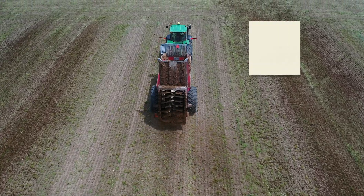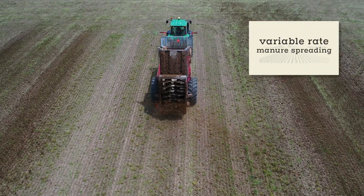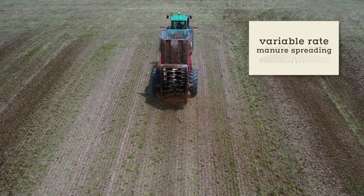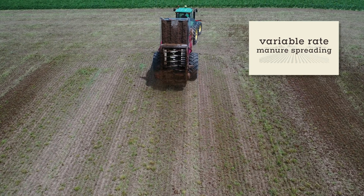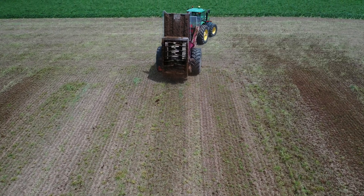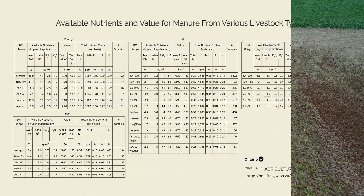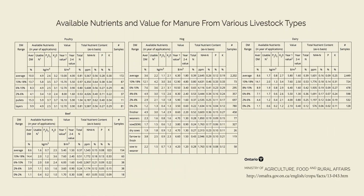Variable rate manure spreading is already here. New technology exists to measure the nutrients in liquid manure on the go while mapping the application pattern and automatically adjusting the application rate according to a prescription.